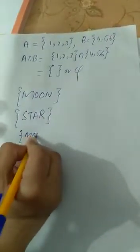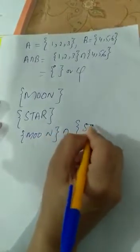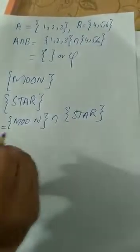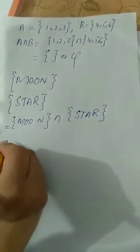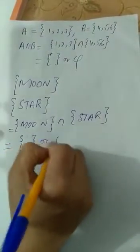For example, moon intersection star. Let's see. There is no single alphabet in common. Empty set is the answer, phi.